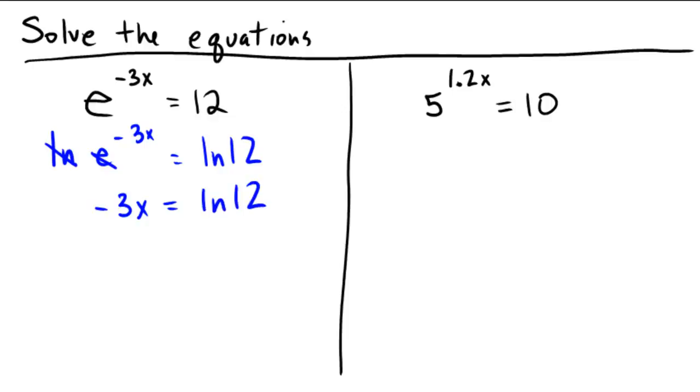One last step towards solving for x. Got to divide by negative 3. Divide by negative 3. So x equals ln of 12 divided by negative 3.